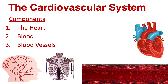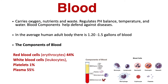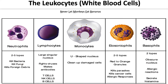The cardiovascular system's main components are the heart, blood, and blood vessels. Blood carries oxygen, nutrition, and waste, and it regulates pH balance, temperature, and water. Blood components such as leukocytes help fight against disease. In blood, you'll find red blood cells (about 44%), white blood cells (less than 1%), platelets (about 1%), and plasma, which makes up the majority at 55%. In the average adult human body there's about 1.2 to 1.5 gallons of blood. Leukocytes consist of neutrophils, lymphocytes, monocytes, eosinophils, and basophils.